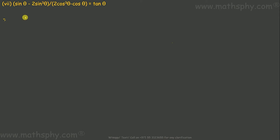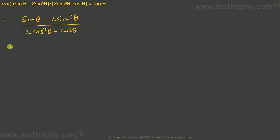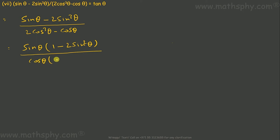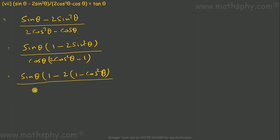This one here — it says (sin θ minus 2 sin cubed θ) over (2 cos cubed θ minus cos θ). We have to prove it equals tan θ. Let's take sin θ as common in the numerator — this gives me sin θ times (1 minus 2 sin squared θ). Let's take cos θ as common in the denominator — this gives me cos θ times (2 cos squared θ minus 1). We leave it as it is.